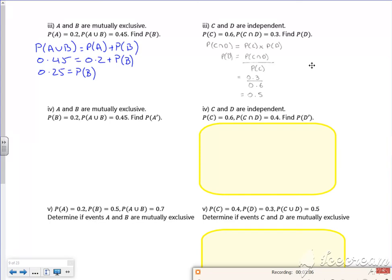So it says A and B are mutually exclusive. So I know if they're mutually exclusive we can add them together. So here's my plan. I'm going to find A first. So I know that A or B is adding them together. So 0.45 is A plus 0.2. So 0.25 is A.